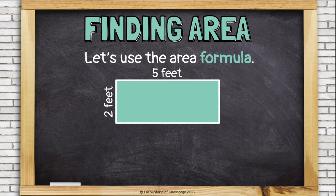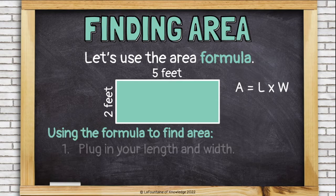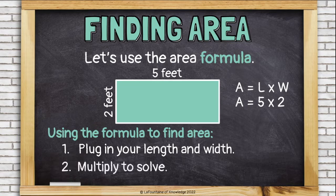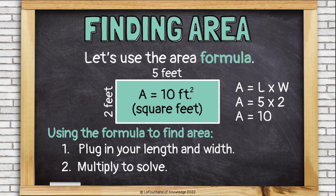Let's try using the formula for area. So first, we're going to plug in our numbers. The length is 5 and the width is 2. Then we just multiply them together. 5 times 2 is 10. So the area of this rectangle is 10 square feet.